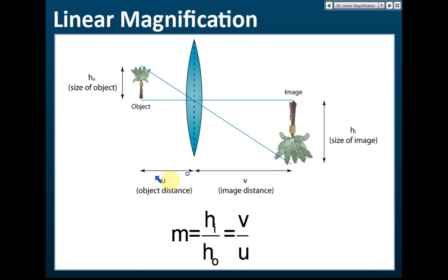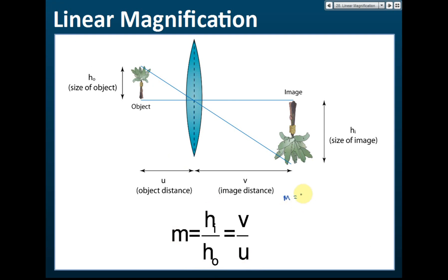We can also use the image distance over object distance — v over u — to get linear magnification. If we draw a line here, these two form similar triangles, so for similar triangles hi over ho equals v over u. This is the equation for linear magnification.